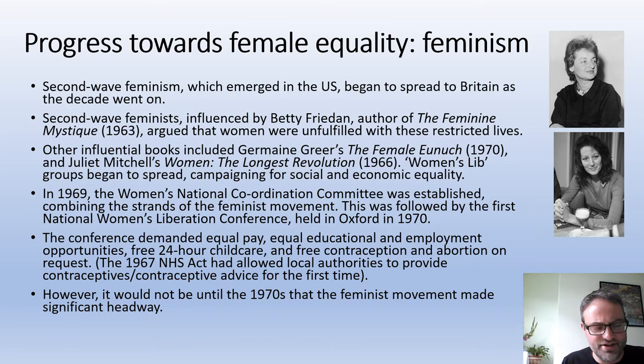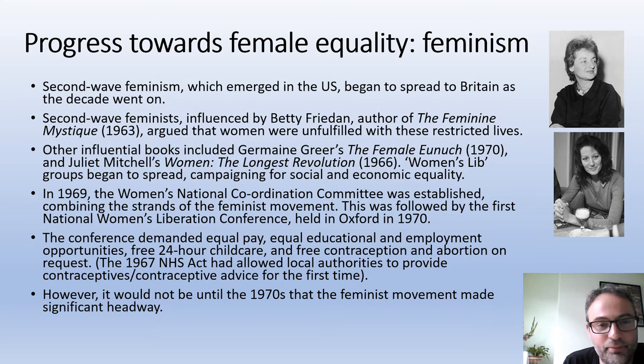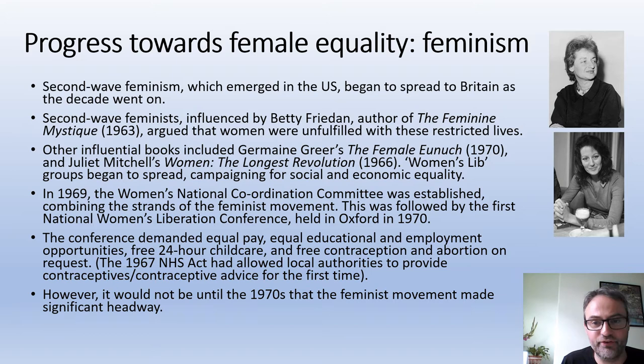Second wave feminism was based on the idea that in the early 20th century there had been a first wave of feminism focused on suffrage — women gaining the vote — which happened in Britain in 1918 and then equally in 1928. Second wave feminism said that was all great and clearly really important progress, but ultimately there was a whole generation of women who were still very restricted.